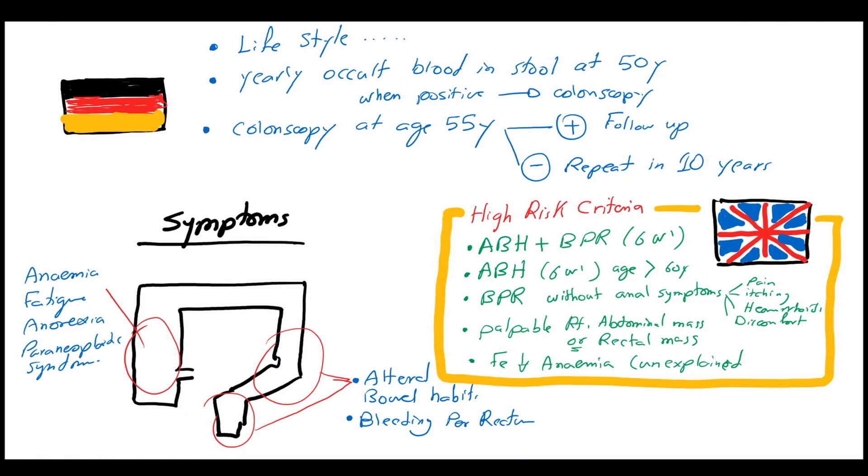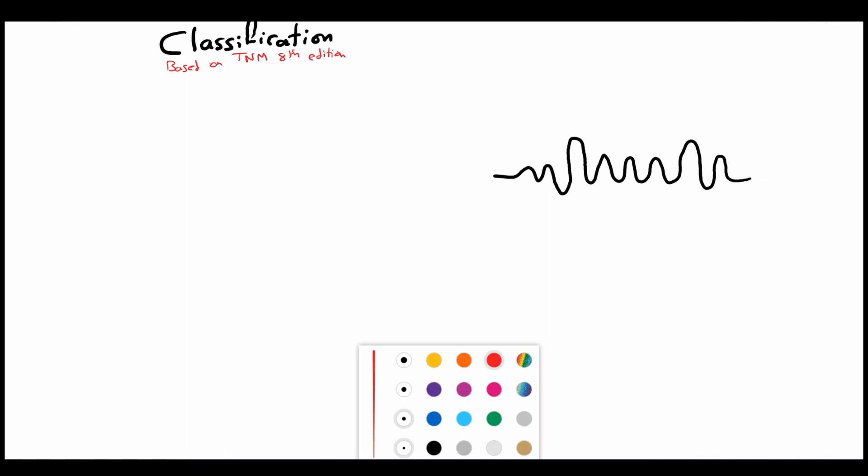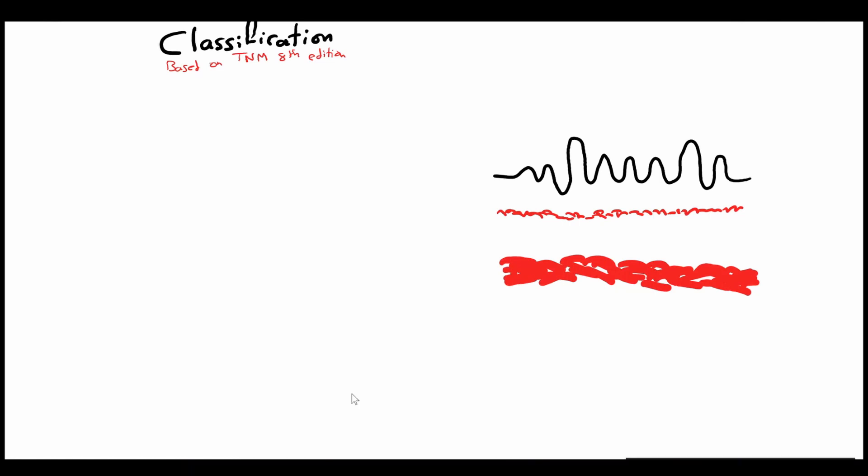Now we will move to the classification of the colorectal carcinoma based on histological features. This classification is based on the TNM 8th edition. As we see here in this diagram, this is a cross section of the colonic wall.